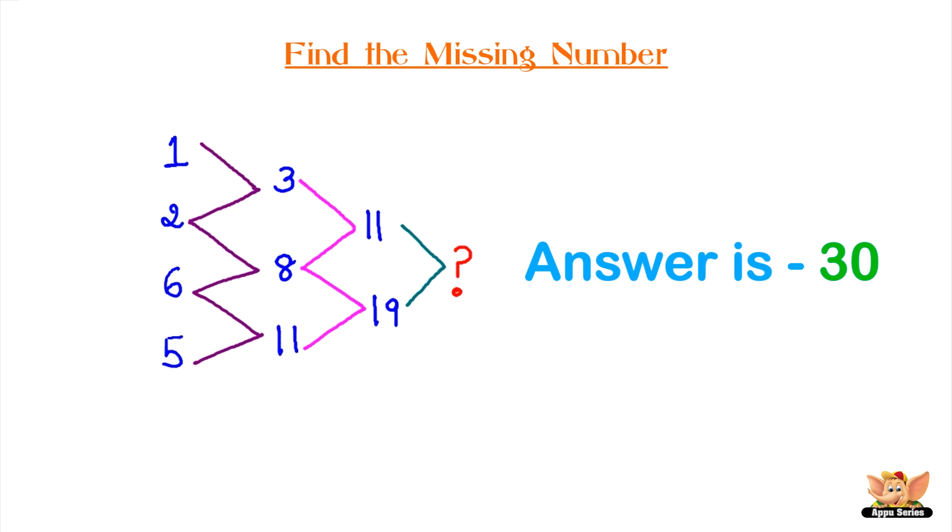Answer is 30. The arrowheads here means plus. So add the first two numbers to get the next number.